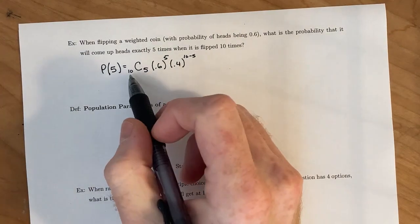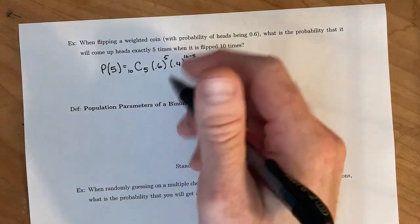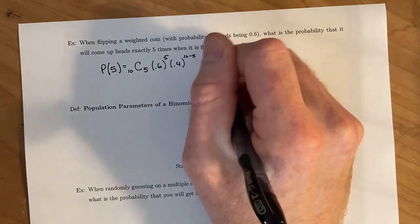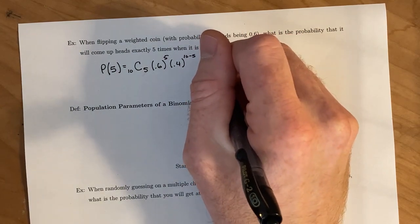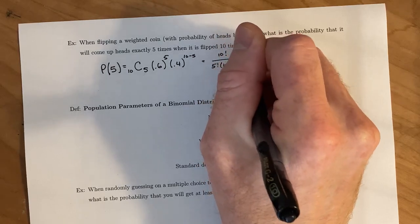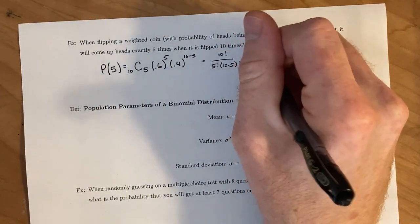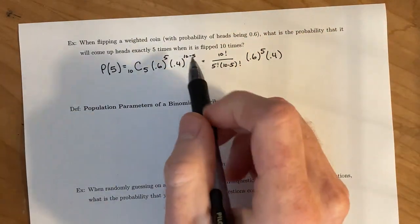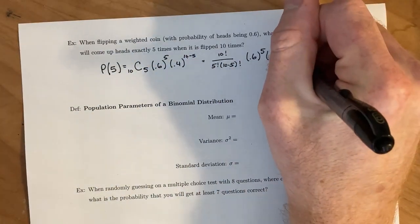We have to recall what this combination is. That was 10 factorial over 5 factorial times 10 minus 5 factorial. And then we have 0.6 to the 5th and 0.4 to the, if you did 10 minus 5, you get 5th power again.